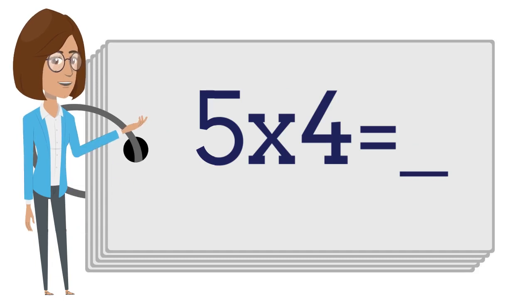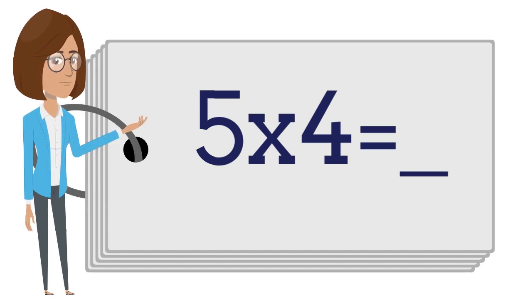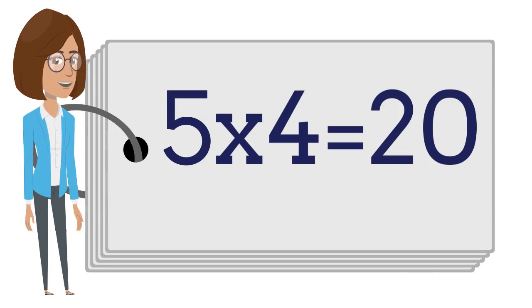Five times four is? Say the answer out loud. Five times four is twenty.